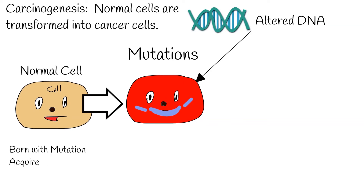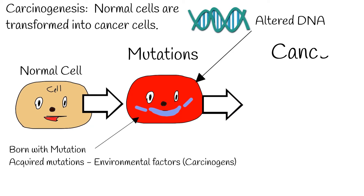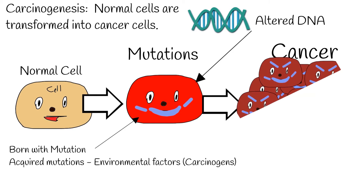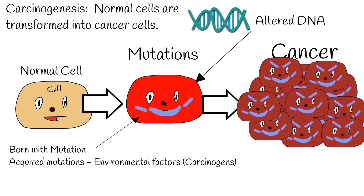There are two main sources to get mutation. First, a person can be born with mutations, so genetic conditions can cause mutations. And second, acquired mutations during lifetime. Carcinogens are environmental factors which can cause mutations in the genome.